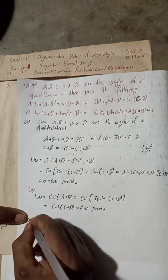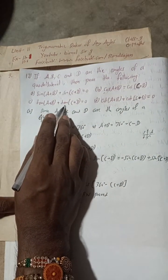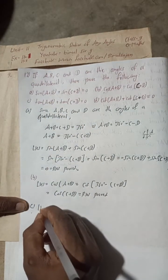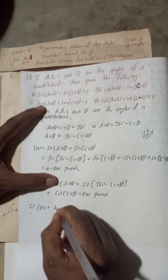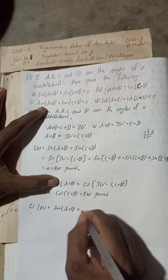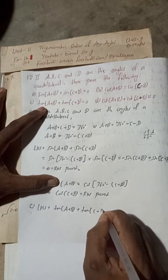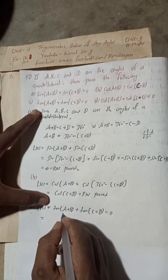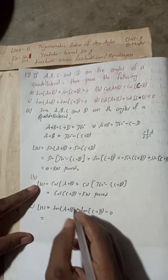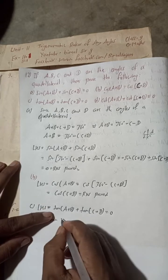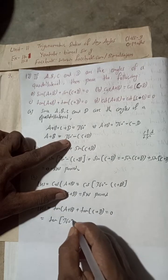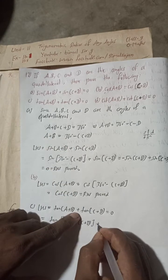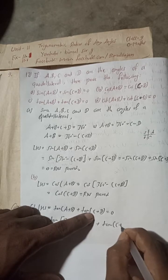Now part C: tan(A+B) + tan(C+D) = 0. Taking the LHS, tan(A+B) can be written as tan(360° − (C+D)), plus tan(C+D).